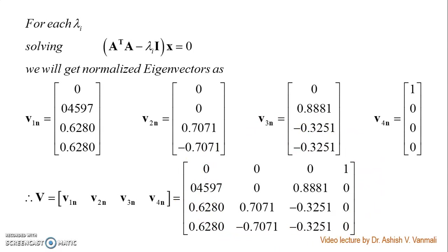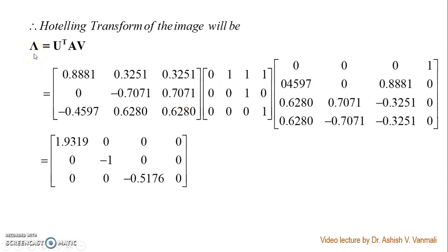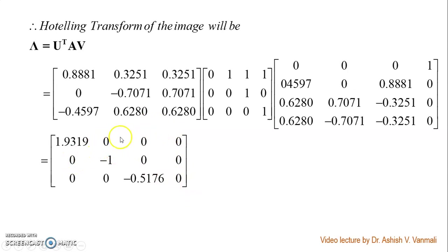Once you have U and V, find the transformed image capital Λ = U transpose · A · V. Substitute the values and perform the matrix multiplication. The final transformed image has non-zero terms only along the principal diagonal, and all off-diagonal terms are zero. This is the transformed image for the first problem.